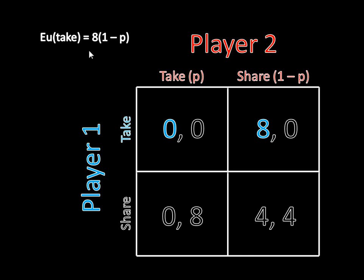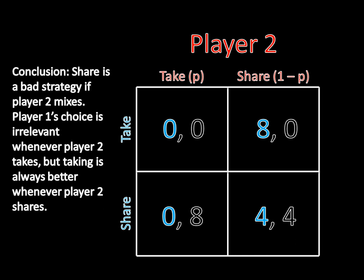If player two maintains that same mixed strategy, can player one play share rationally? No. If player one plays share, he gets zero times P plus four times one minus P, so his expected utility for share is four times one minus P. That's strictly worse than eight times one minus P from playing take. It's always better for player one to play take when player two is mixing. So share is a bad strategy if player two mixes — player one must play take with probability one given that player two is mixing between take and share.